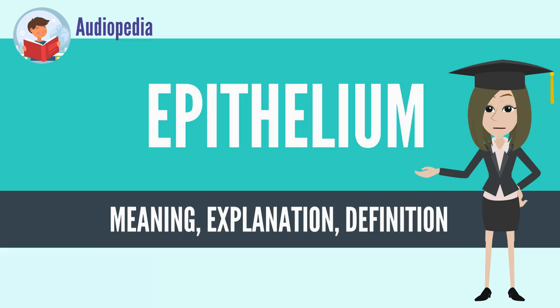In some tissues, a layer of columnar cells may appear to be stratified due to the placement of the nuclei. This sort of tissue is called pseudostratified.